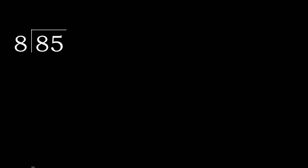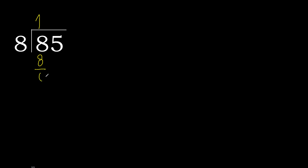85 divided by 8. 8 is not less, therefore with 8 here. 8 multiplied by which number is nearest to 8 but not greater? 8 multiplied by 1 is 8, which is not greater. 8 minus 8 is 0.